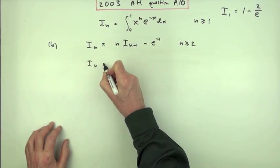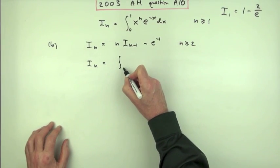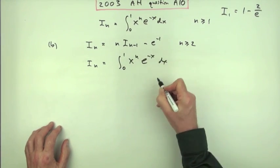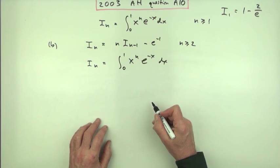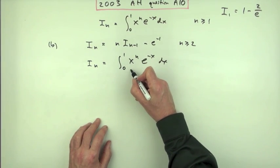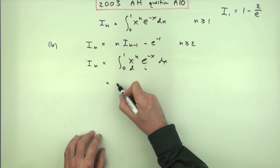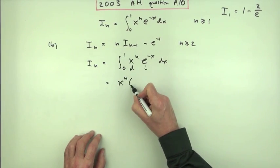So just start at the beginning. What is i to the n? It's from 0 to 1 of x to the n, e to the negative x dx. Standard integration by parts. I'll whittle this one away, so that'll get differentiated, that'll get integrated. So integrate first, leave that, integrate that.